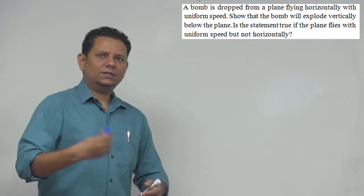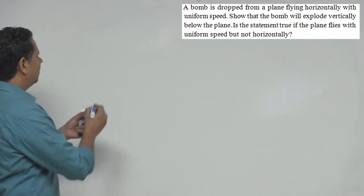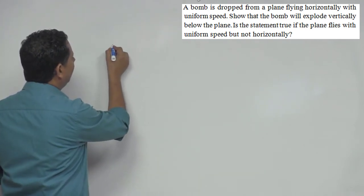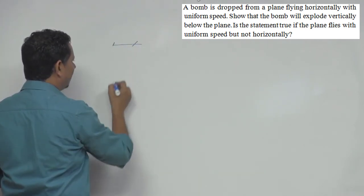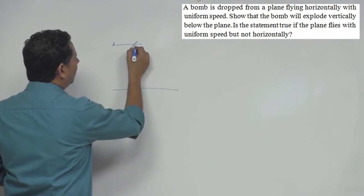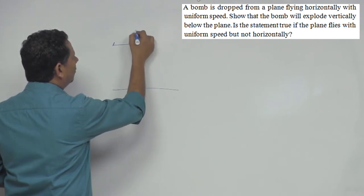This is a conceptual question, so let's say for example, here is an aeroplane and this is how it is flying. You have a ground, and at this time when the bomb is dropped, let's say its velocity is u.